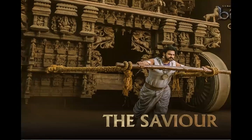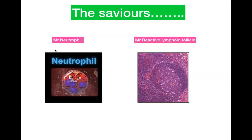Once H. pylori has inhabited the stomach and entered the mucosa, the body will protect itself. The two defenders against H. pylori are neutrophils and reactive lymphoid follicles. In a normal gastric mucosa — from the body to the antrum — we are not going to find any reactive lymphoid follicles. Finding any reactive lymphoid follicle means there is some associated H. pylori infection in the vicinity. Small lymphoid aggregates may be seen in the body, but reactive lymphoid follicles in the antrum are not normally seen.